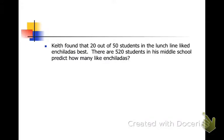Our final example: Keith found that 20 out of 50 students in the lunch line liked the enchiladas best. There are 520 students in his middle school. How many students would like enchiladas based on this information? We have a couple different things. We can change the 20 out of 50 to a reduced fraction, to a percent.